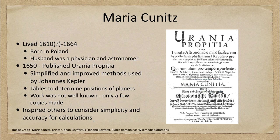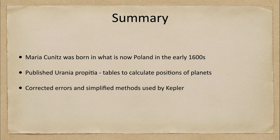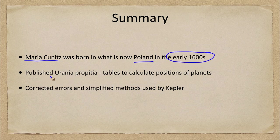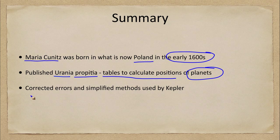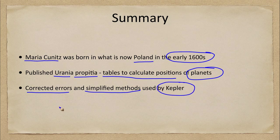To summarize: Maria Kunitz was born in what is now Poland in the early 1600s. She published the Urania Propitia, which was a set of tables to calculate positions of the planets in the sky. She corrected errors and simplified the methods that had been used by Kepler just a couple of decades before.